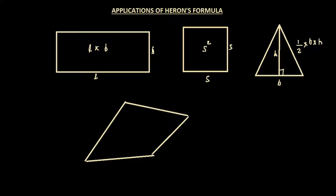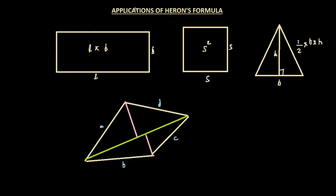We can find the area of such a quadrilateral by dividing it into two triangles by drawing a diagonal. We can then find the area of each triangle by dropping perpendiculars — the green line as the base and the pink lines as the perpendiculars. But if we are only given the side lengths of the quadrilateral, we don't know the length of the diagonal or the perpendiculars, so how can we find the area?